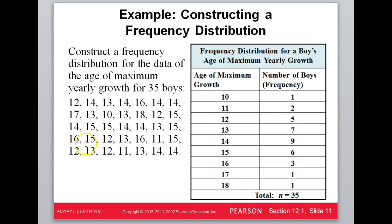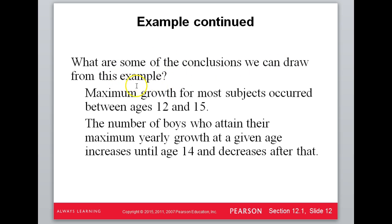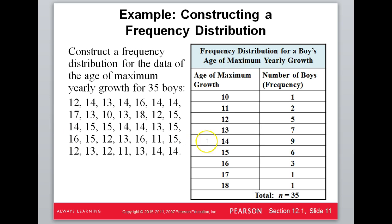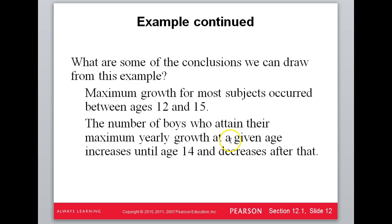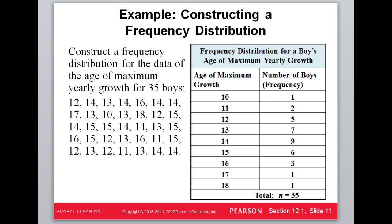From this data set, we can draw conclusions: maximum growth occurs between ages 12 and 15. The number of boys who attained their maximum yearly growth increases until about age 14, then starts to go back down. Very few boys are in the 10–11 age range for peak growth, and late bloomers who grow most after age 14 or 15 are rare — it happens, but it's uncommon.